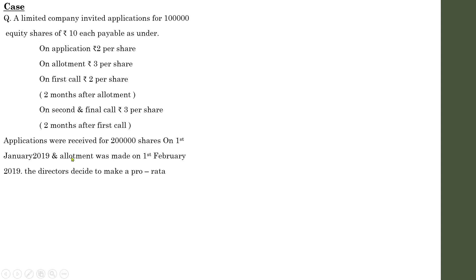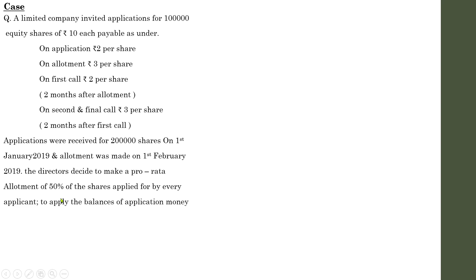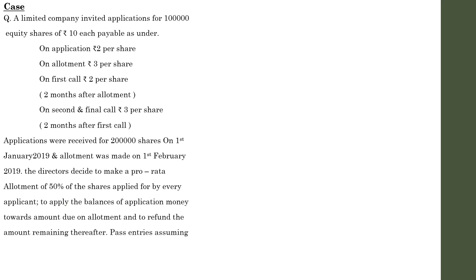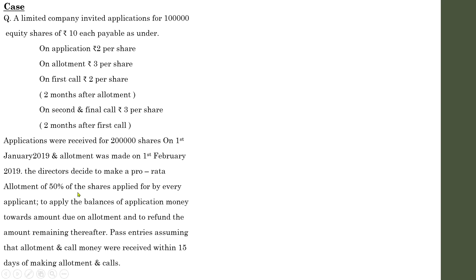The directors decided to make a pro-rata allotment of 50% of the shares applied for by every applicant, to apply the balances of application money towards the amount due on allotment, and to refund the amount remaining thereafter. Pass entries assuming that allotment and call monies were received within 15 days of making allotment and calls. So whenever you pass entries with regard to allotment and call money, make sure to leave a 15-day gap between those two entries.